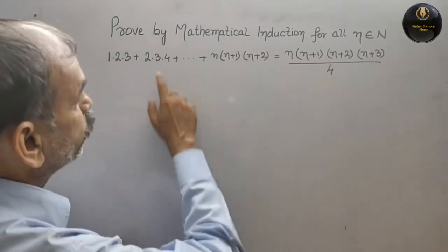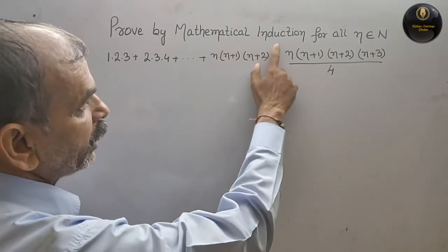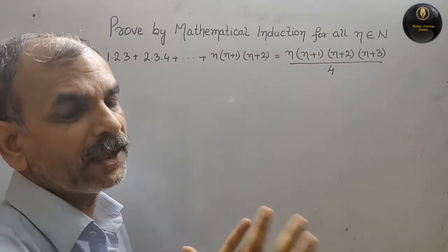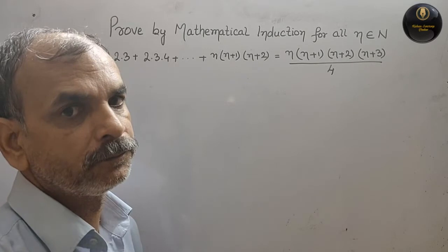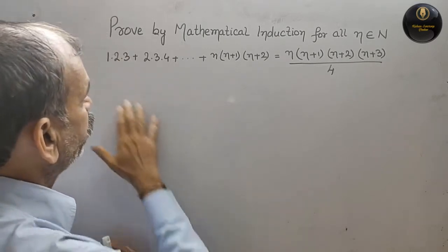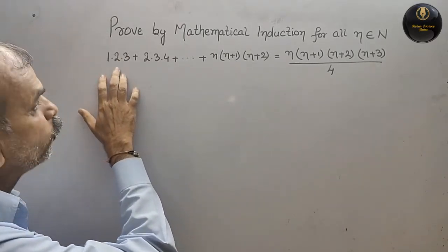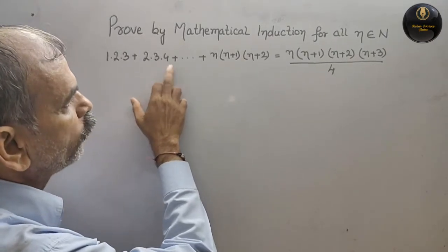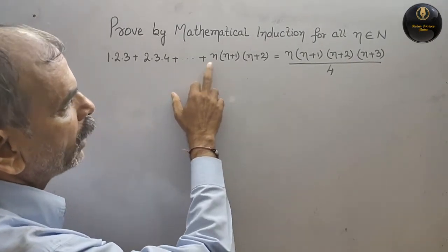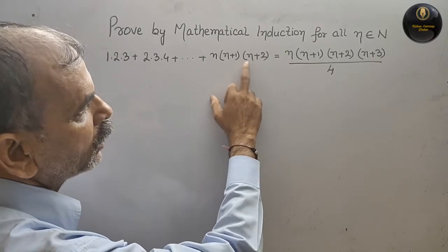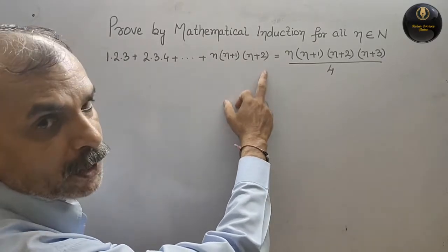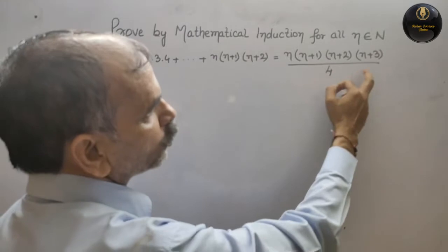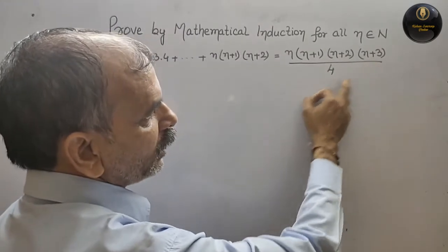The question is: prove by mathematical induction for all n belonging to the natural numbers that 1·2·3 + 2·3·4 + ... + n(n+1)(n+2) = n(n+1)(n+2)(n+3) / 4.